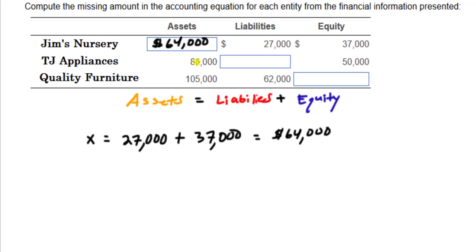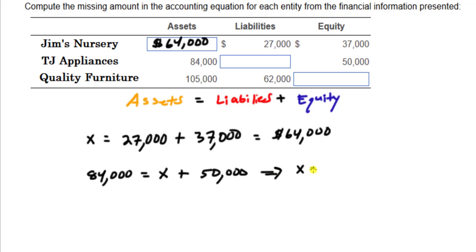TJ's Appliances: at some point in time, TJ's Appliances has $84,000 worth of assets and $50,000 worth of equity. You subtract how much the owners claim from total assets to get liabilities. So $84,000 equals X plus $50,000. Solving for X: $84,000 minus $50,000 equals $34,000. TJ's Appliances has $34,000 worth of liabilities.